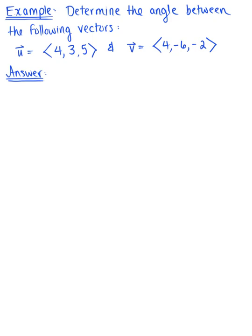Determine the angle between the following vectors. We are given vector u, defined by the components 4, 3, 5, and vector v, defined by the components 4, negative 6, negative 2.